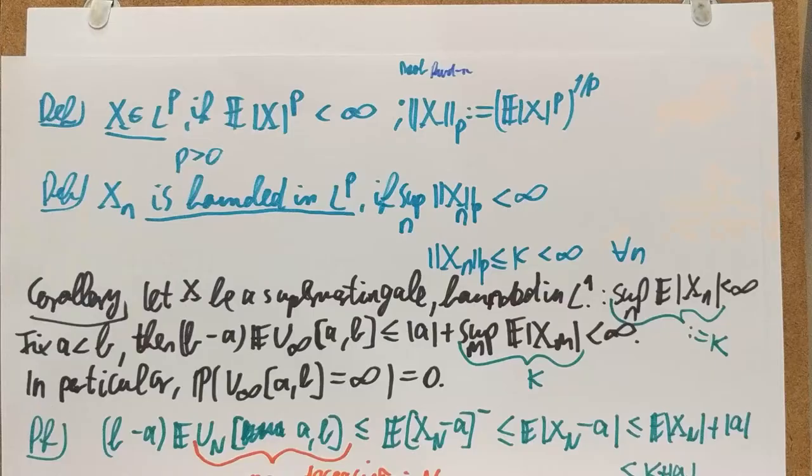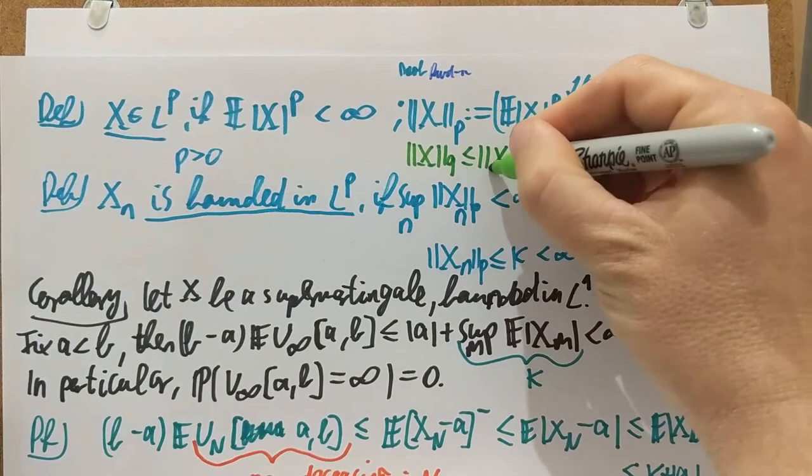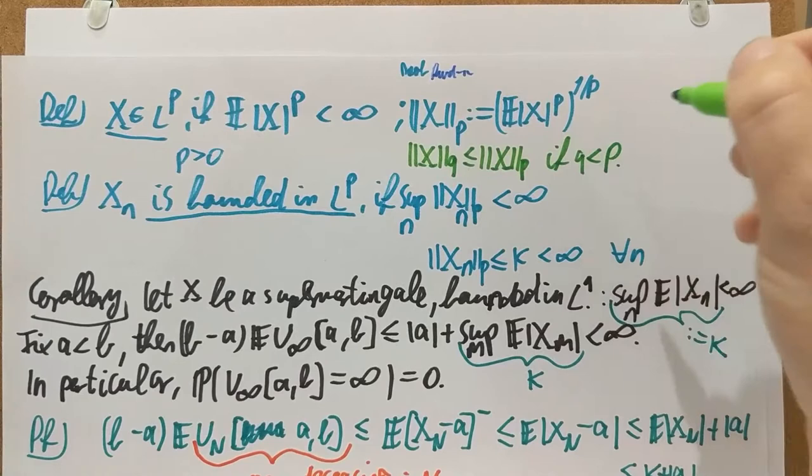Hi, next I'll tell you about the case of being in L2, which is particularly nice because we can compute things much easier there, and we have very nice convergence theorems there too. I'd like to start with a reminder — this is the paper from the previous video — and I'd like to tell you about Lyapunov's inequality, which exactly told us that the xq norm is less than or equal to the xp norm if q is smaller than p.